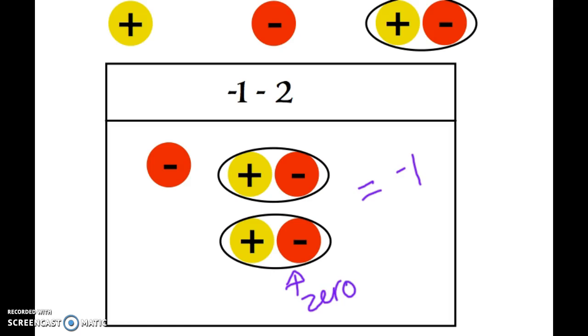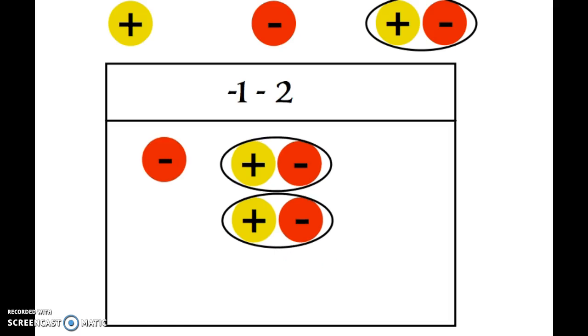Now I'm allowed to start taking things away. So remember, I want to take away two positives. So I'm going to go 1, 2, two positives are out. And you can notice I have three negatives left. So negative 1 minus 2 is negative 3.